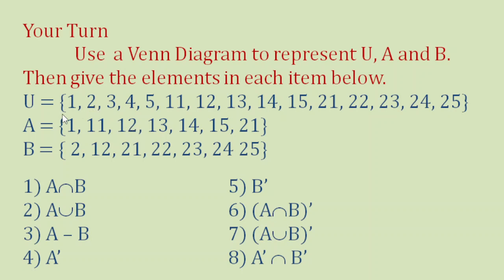The elements of U are 1, 2, 3, 4, 5, 11, 12, 13, 14, 15, 21, 22, 23, 24, 25. The elements of A are 1, 11, 12, 13, 14, 15, and 21. The elements of B are 2, 12, 21, 22, 23, 24, 25.